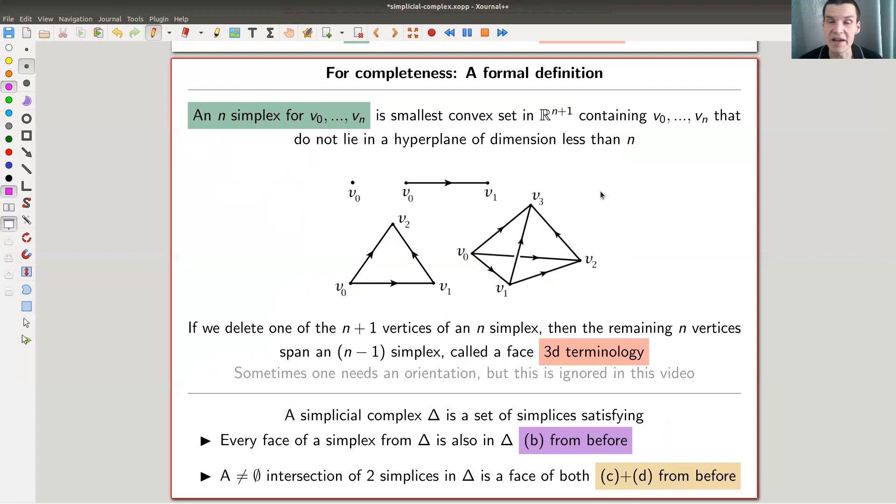And that's exactly already the definition of a simplicial complex. So an n simplex, by definition, is the smallest convex set. The only confusing thing here is that you have to go one dimension up. So my triangle in this case would live in R three. That would like to see think of it as being in R three. And how does it work? I take a certain number of points and I take the smallest convex set containing those points.